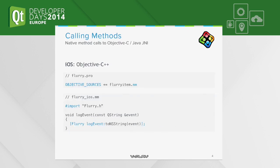The first task for native functionality is calling native functions from C++ to Objective-C on iOS, or Java on Android. On iOS this is a rather simple task thanks to the iOS compiler which can speak Objective-C++, which is the combination of Objective-C code and C++ code. You just have to make sure that your iOS implementation file has the .mm ending and add it to the OBJECTIVE_SOURCES block of your project file. You can then simply call pure Objective-C functions within your C++ functions.